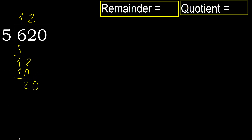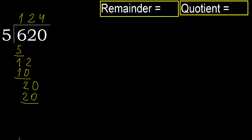20. 5 multiplied by 4 is 20, which is not greater. Subtract: 20 minus 20 is 0. Next.